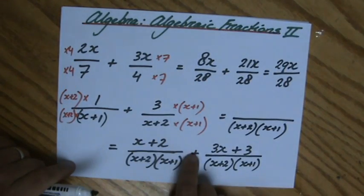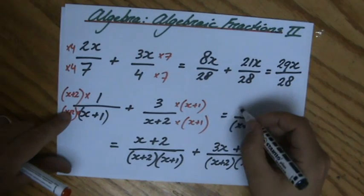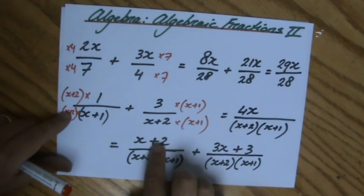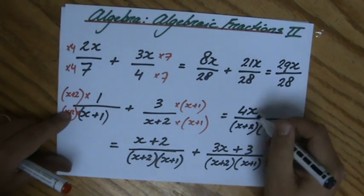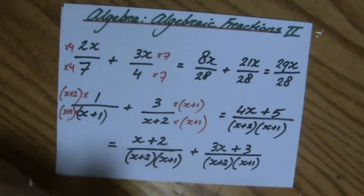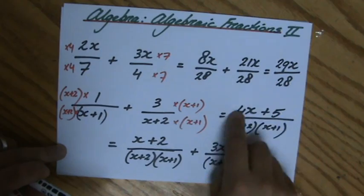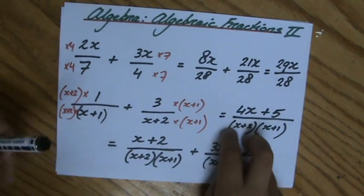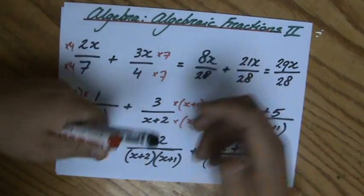x + 3x, that is 4x, and 2 + 3, that is 5. Fantastic. And could I perhaps factorize my numerator? I can't, because there's no common factor. Sometimes you can, and then perhaps there is a common factor in the numerator and denominator, but for now this is my final answer.